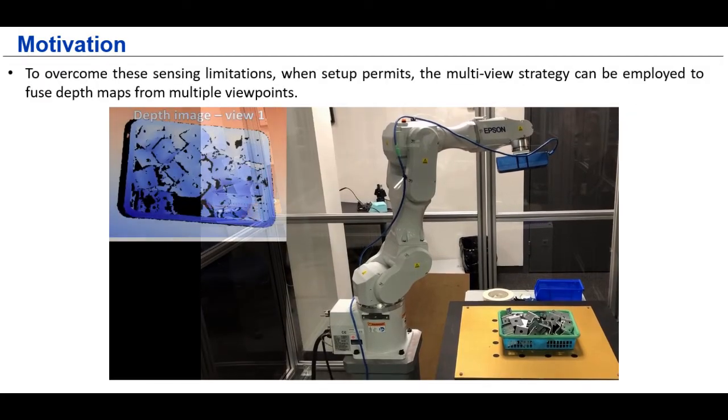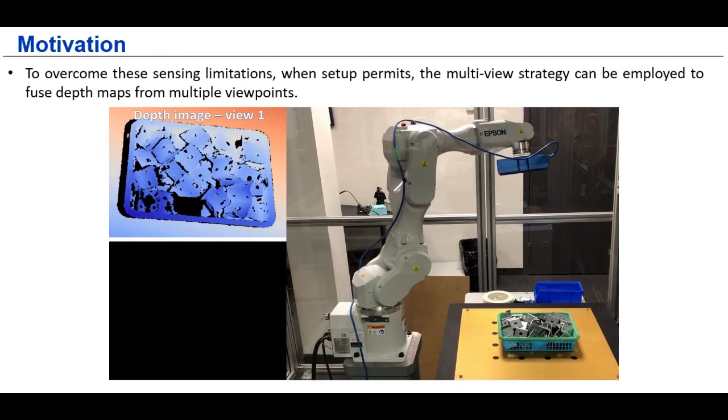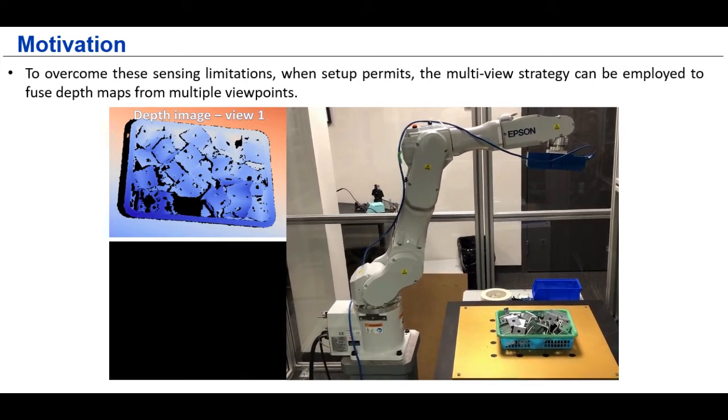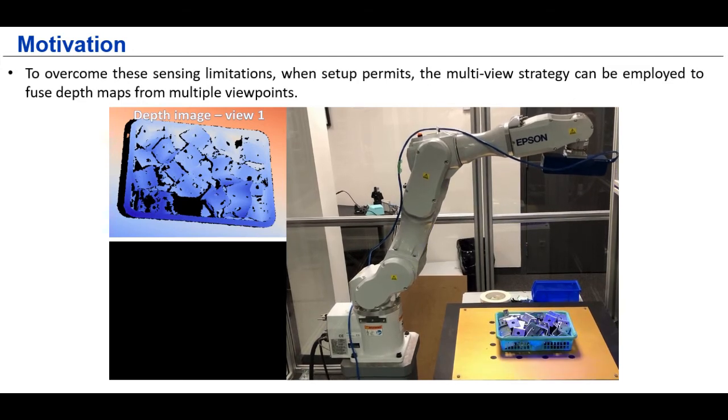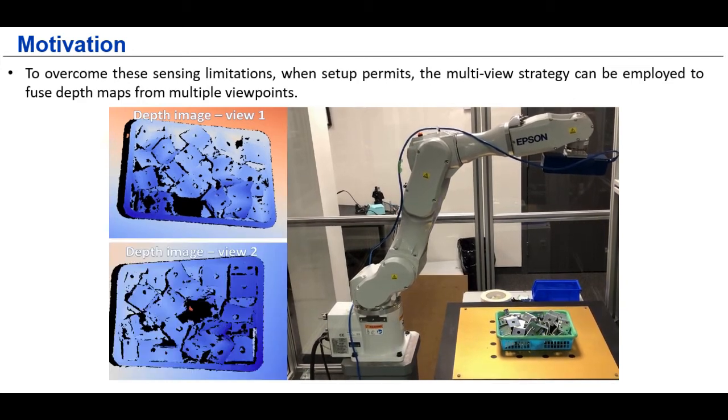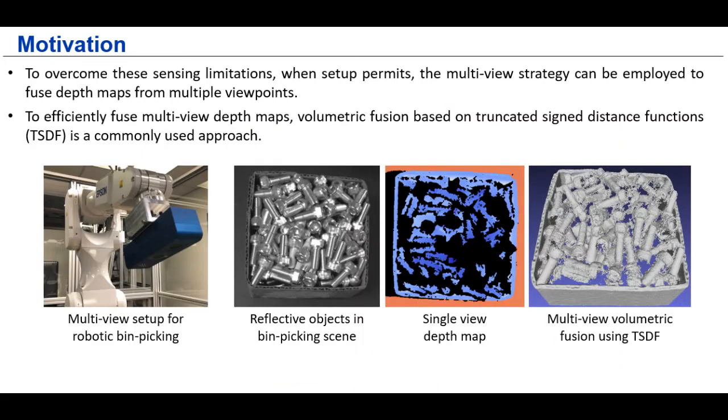To compensate for this problem, when setup permits, we can use the Multi-View strategy to fuse the depth maps from different viewpoints. Here, we can see the acquired Multi-View depth maps are compensated to each other's. In this example, we show a reconstruction result using the standard TSDF volumetric fusion, which can provide a higher level of the scene composition compared to the single view depth map.